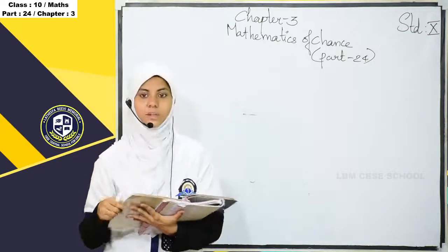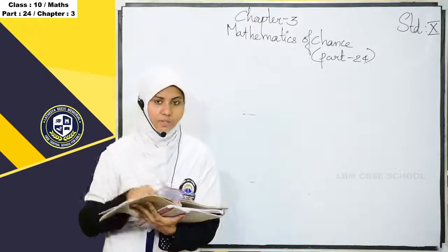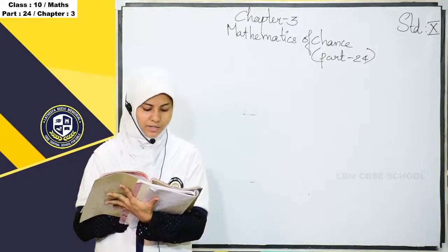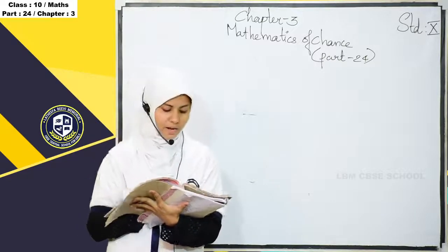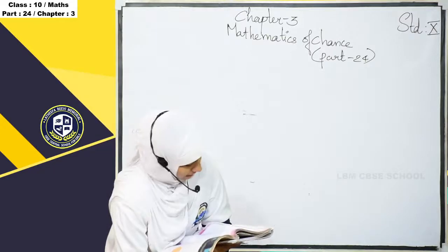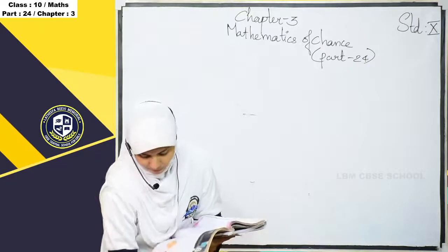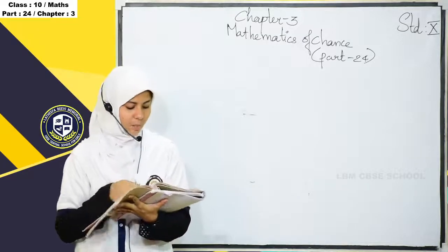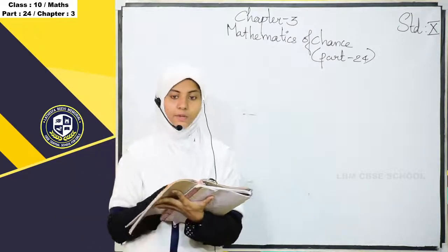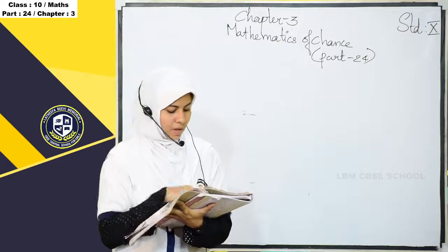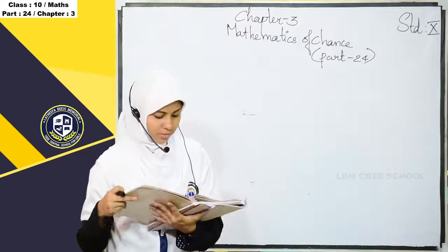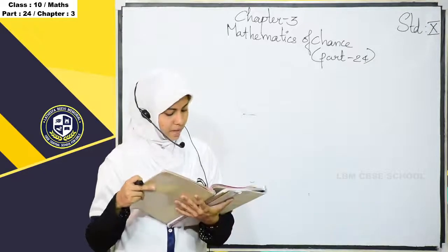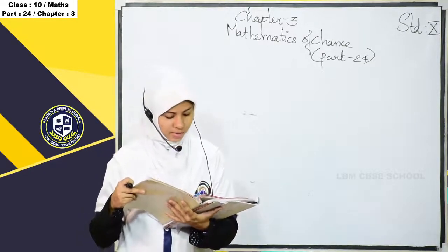You have some exercise on page number 78. First question: In class 10A there are 30 boys and 20 girls. In 10B there are 15 boys and 25 girls. One student is to be selected from each class. What is the probability of both being girls? Both being boys? One boy and one girl? And at least one boy?